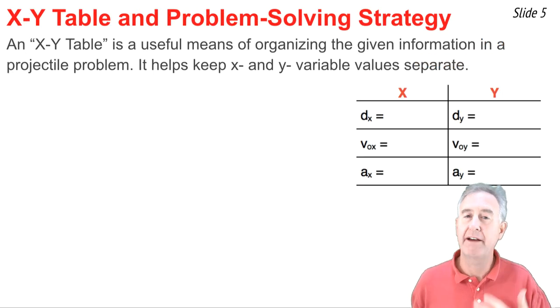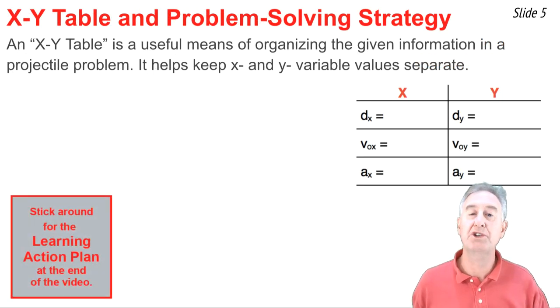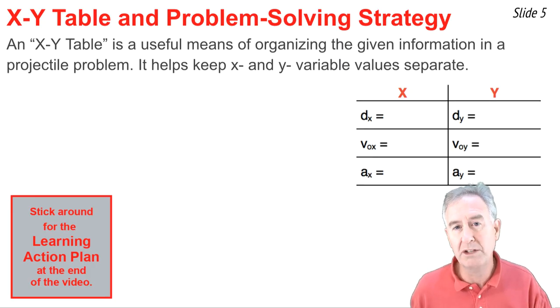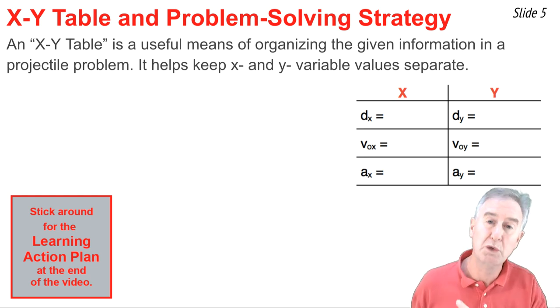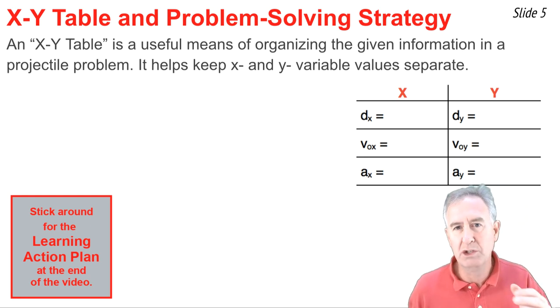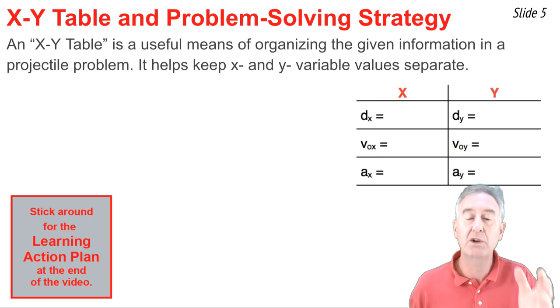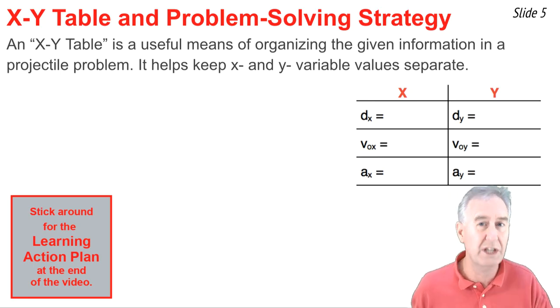I'm going to demonstrate the use of that five-step method in order to solve or at least begin a projectile problem. Now step two and three involve identifying the known and the unknown values and relating it to a symbol. So one useful means of doing that is the use of an X-Y table where you list what's known and unknown in two columns, one for the X information and one for the Y information.